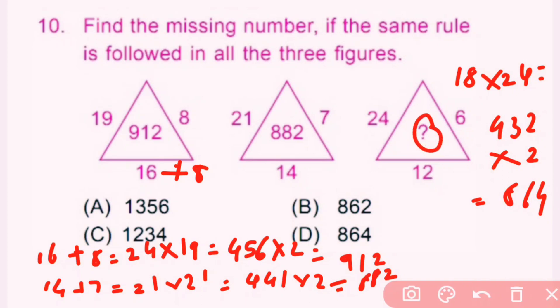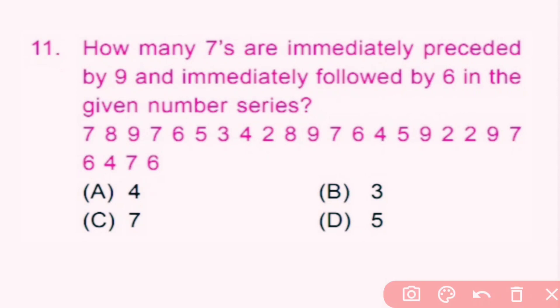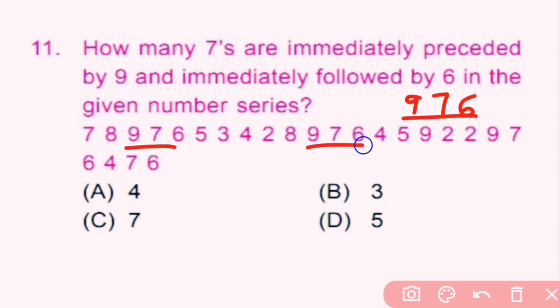Question number 11: How many 7s are immediately preceded by 9 and immediately followed by 6 in the given number series? We need to find occurrences of the pattern 9-7-6. Checking the series: there are three such occurrences. So the answer is 3.